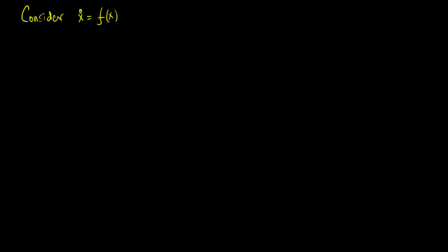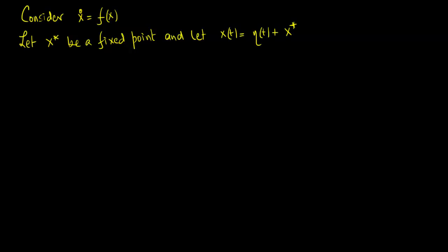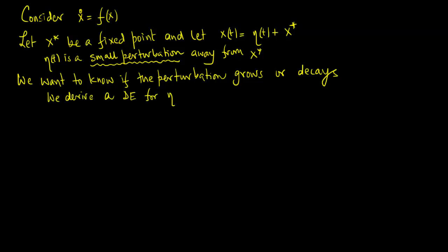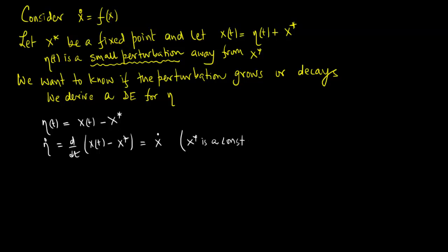Consider x_dot = f(x) and let x* be a fixed point. Let x(t) = η(t) + x*, where η(t) is a small perturbation away from x*. We want to know if the perturbation grows or decays, so we derive a differential equation for η. Since η(t) = x(t) − x*, we have η_dot = x_dot, as x* is simply a constant.